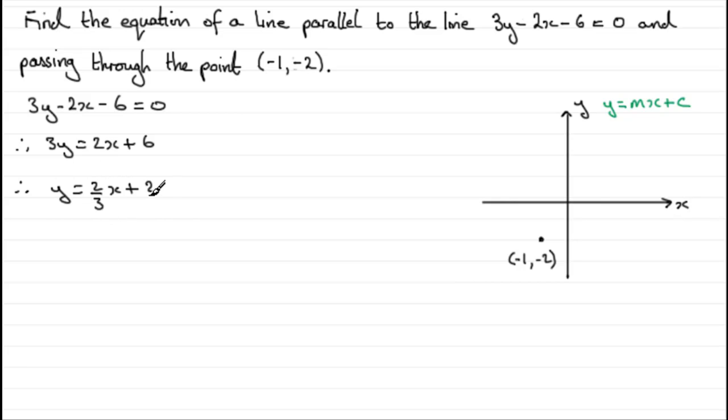So I can clearly see now that this line has a gradient of 2 thirds and when x is 0, y is 2 which will tell me that it crosses the y-axis at 2 units up.